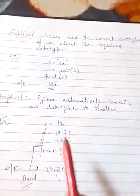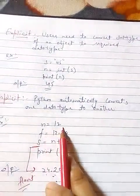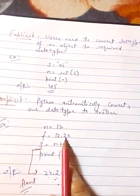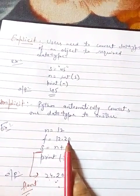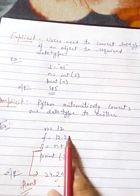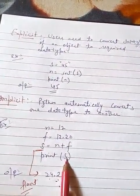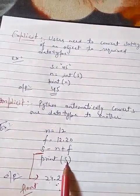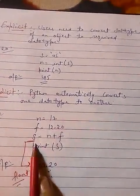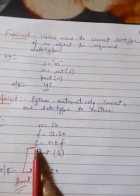Implicit type conversion means Python automatically converts one data type into another. For example, n equals 12, f equals 12.20, which is a floating data type. Now s equals n plus f, that means the sum of these two variables' values. Print s. Automatically, s would be a floating type value because the result would be in float. So s data type would be automatically converted into floating data type.